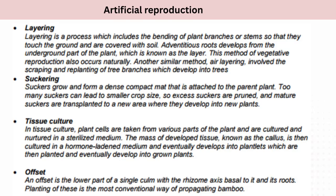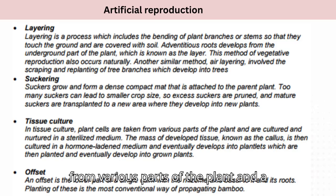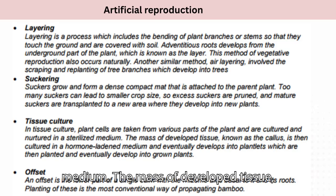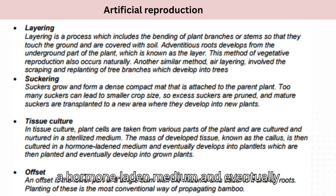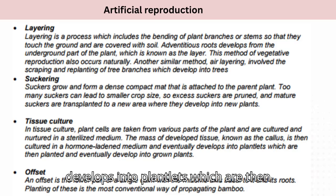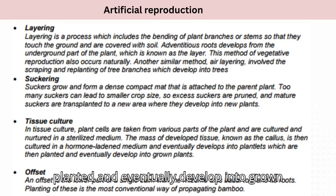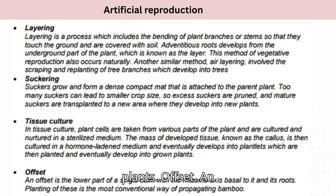Tissue culture: in tissue culture, plant cells are taken from various parts of the plant and cultured and nurtured in a sterilized medium. The mass of developed tissue, known as the callus, is then cultured in a hormone-laden medium and eventually develops into plantlets, which are then planted and eventually develop into grown plants.